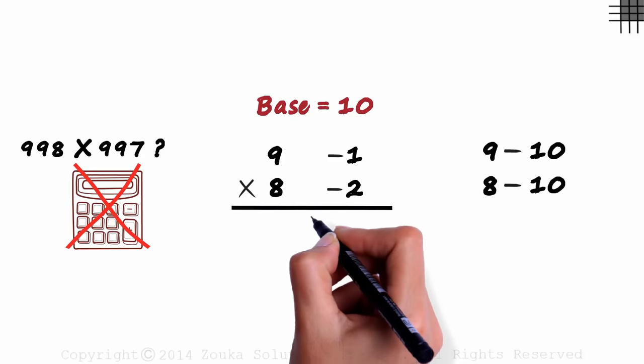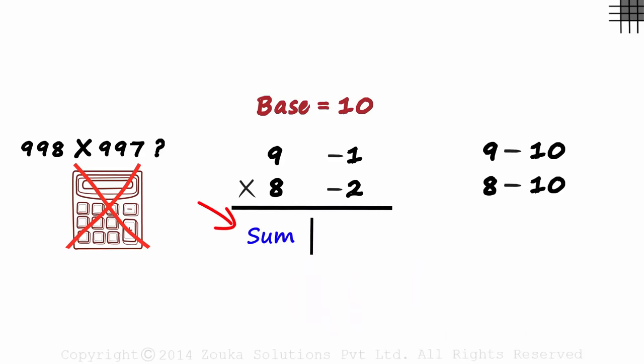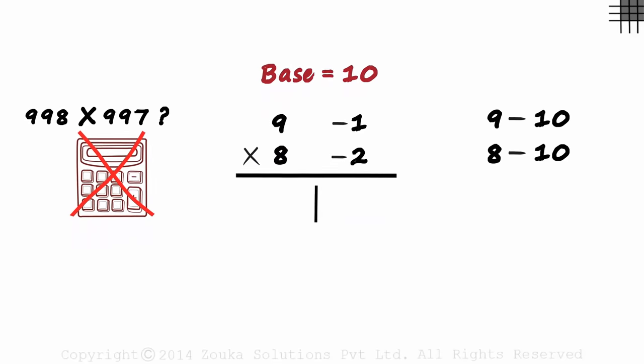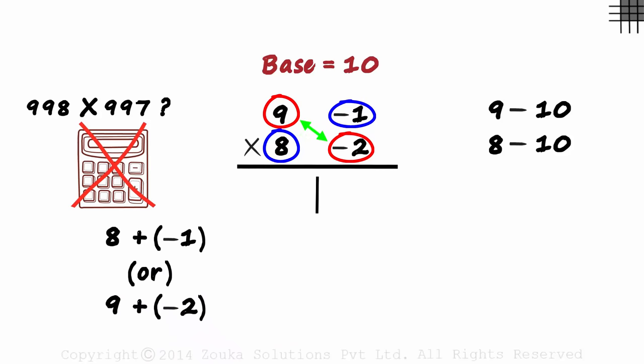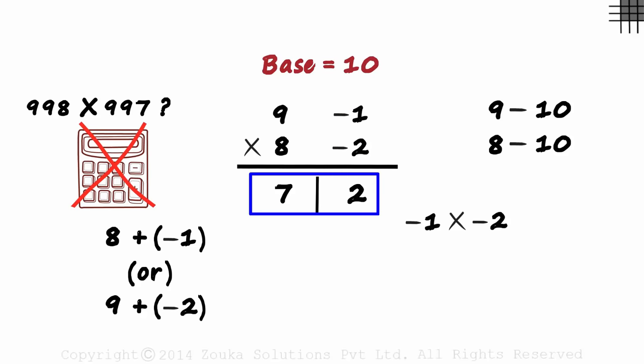Once this is done, just make a partition like this. On the left, we write the sum. What sum? The sum of these two numbers or these two numbers. Both will result in the same answer. Either 8 plus minus 1 or 9 plus minus 2. Both equal 7. So we write a 7 on the left. On the right, we have the product of these two numbers. Minus 1 multiplied by minus 2. And that equals 2? Yes, we should also consider the sign when we multiply these two numbers. There you go! We have the answer. 9 times 8 is 72.